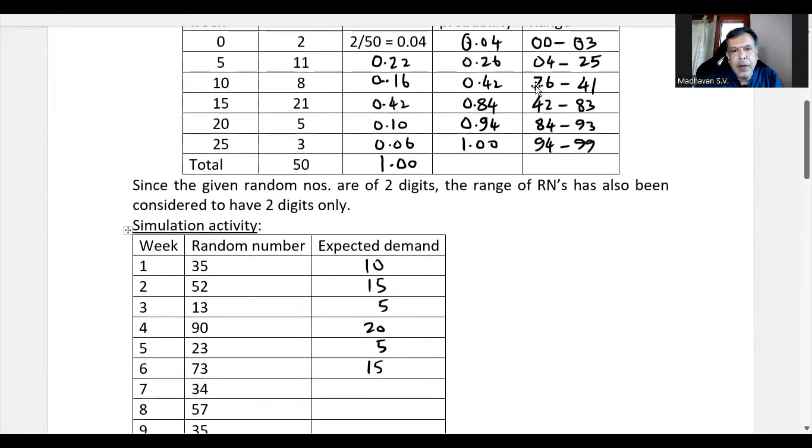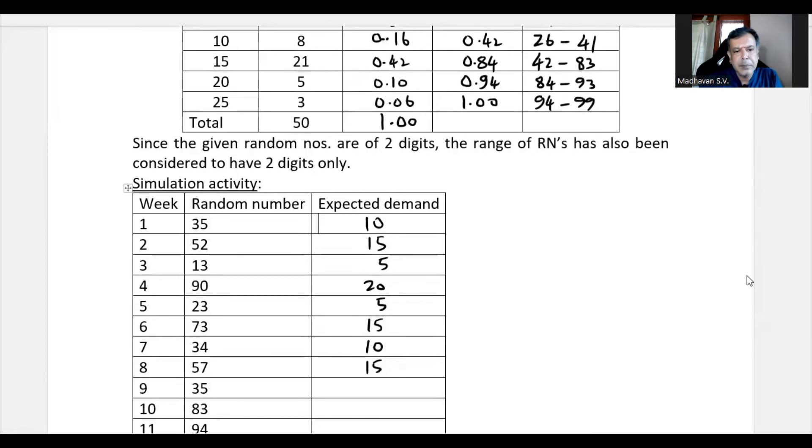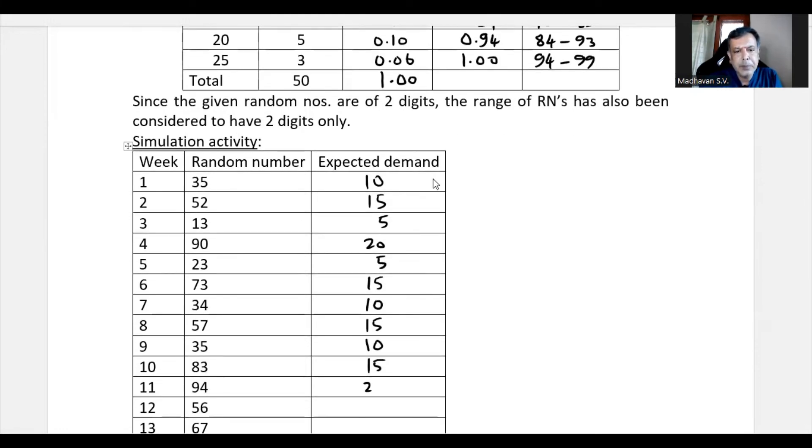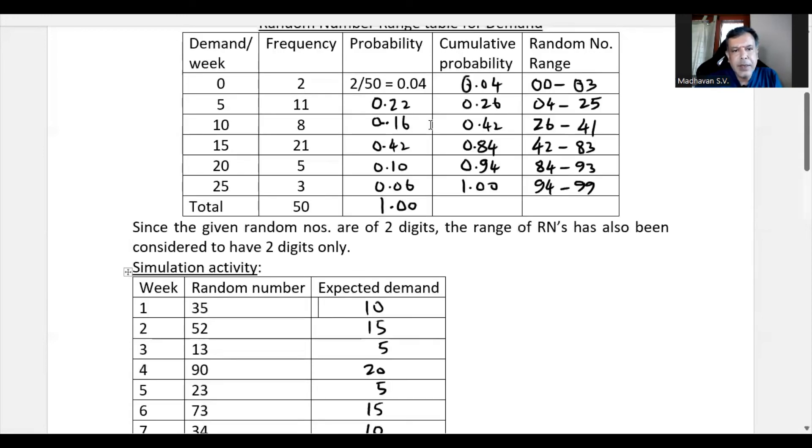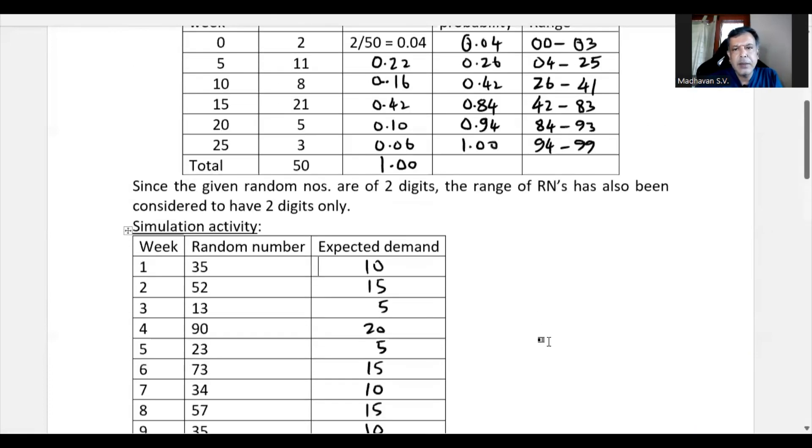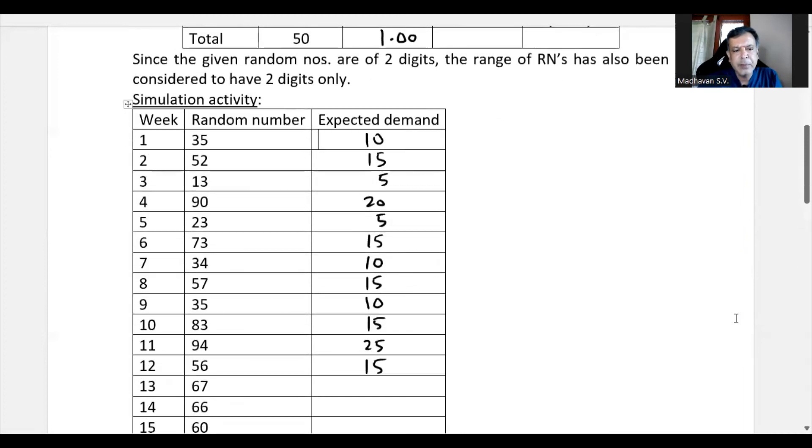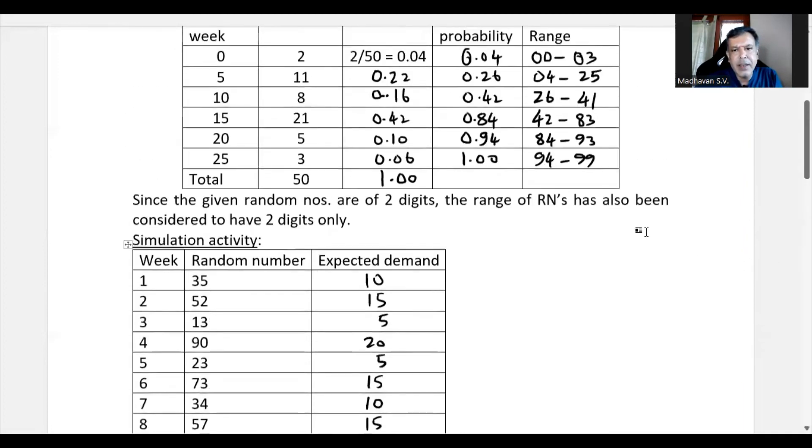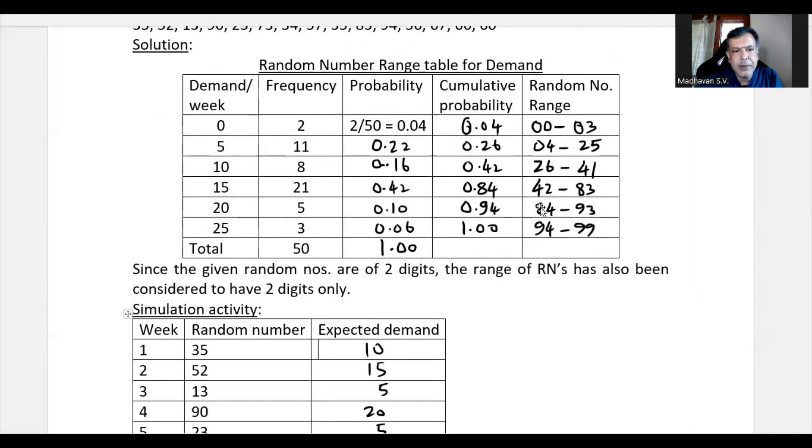Then 34, 34 lies here which is 10. Then 57 lies here which is 15. 35, it is here. So it is 10. 83 which is here which is 15. 94, it is here and that is 25. 56, it is here and that is 15. 67 occurs here and that is again 15. Then 66 and 60, 66 and 60 both lies here. That means 15 and 15.